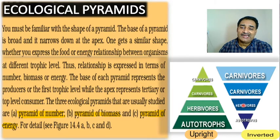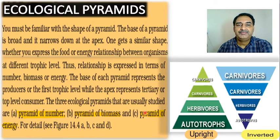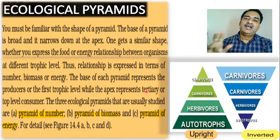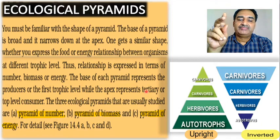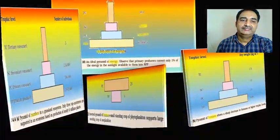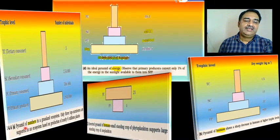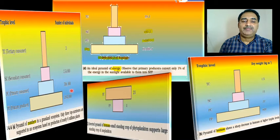Apart from shape, pyramids are also classified on other parameters. The three ecological pyramids usually studied are: pyramid of numbers, pyramid of biomass, and pyramid of energy. On the basis of shape: upright and downward. On the basis of parameters: number pyramid, biomass pyramid, and energy pyramid. This is a number pyramid in a grassland ecosystem, this is an energy pyramid, and this is a biomass pyramid — this one is inverted, the other three are upright.